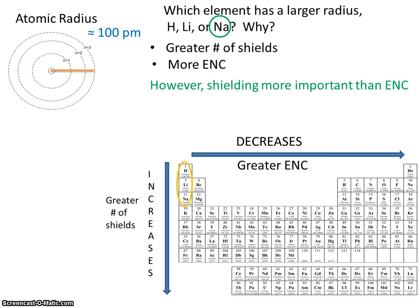But remember that shielding is more important than nuclear charge. So between hydrogen, lithium, and sodium, sodium is the largest because there's more shields in between the nucleus and the valence electron, and those shields block these outer electrons from the pull of the nucleus.